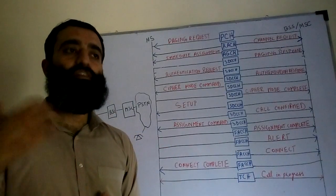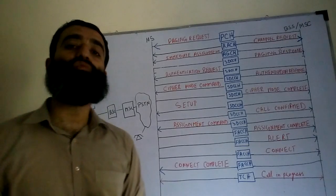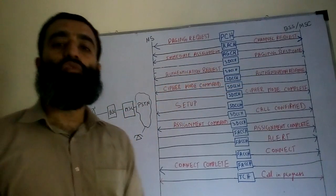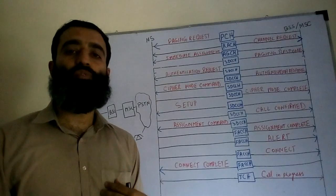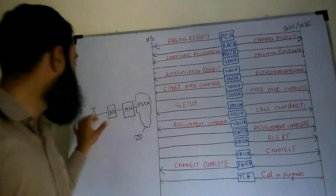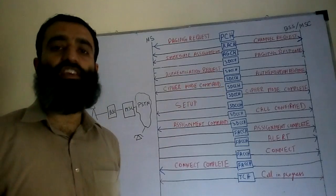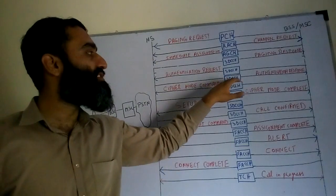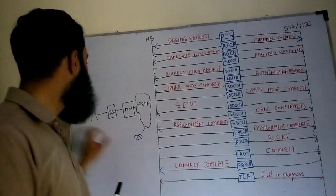On the same SDCCH channel, the network requests the mobile to give its credentials and authenticate itself. The details of the authentication procedure will be covered in a later lecture. Once the mobile station receives this authentication request on the SDCCH, it will respond on the same SDCCH channel with its authentication parameters.